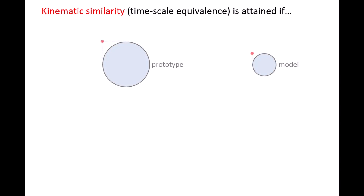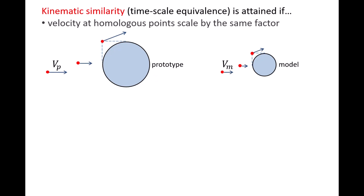For example, let's say we are studying flow over a sphere. The prototype is located on the left and the model is located on the right. The red points in the prototype and model are located at a position that is parallel to the top side and parallel to the left side of the sphere, so the two points are homologous. To attain kinematic similarity between the model and prototype, the velocity vectors at all homologous points must point in the same direction and be scaled by the same factor.